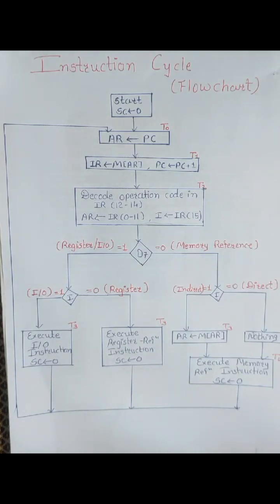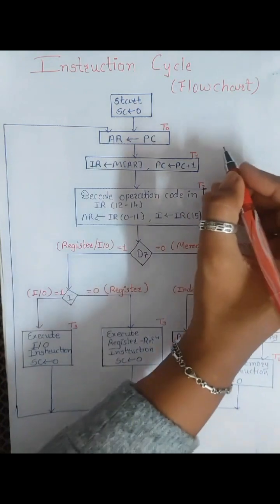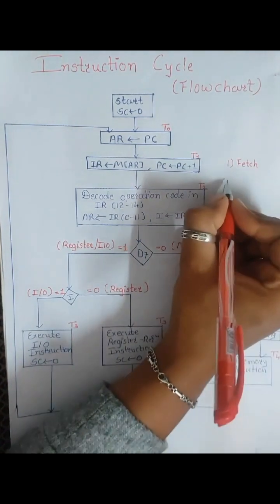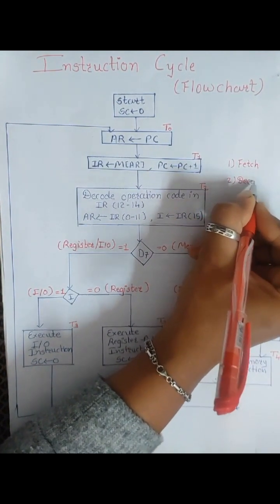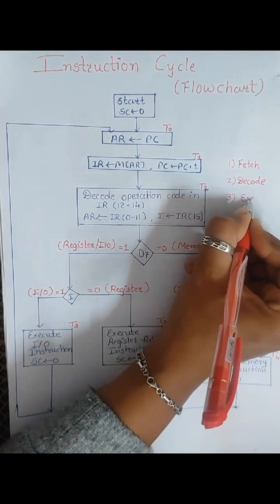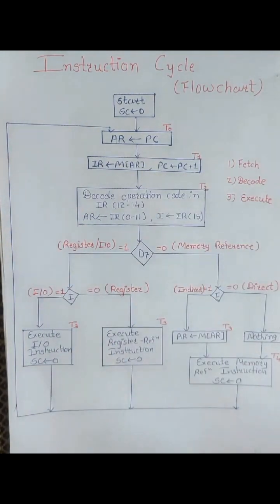Hello students. In this lecture we are going to study about the instruction cycle, the flowchart of instruction cycle, and how the instruction is executed. As you know, instruction is executed in three phases: first fetch, then decode, and third, execution. These are the basic phases of how we execute an instruction.